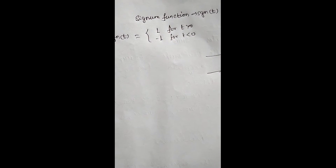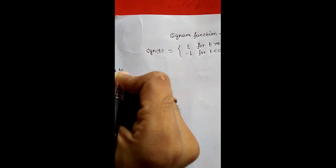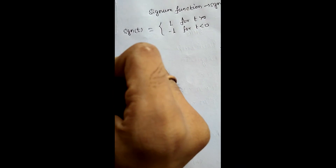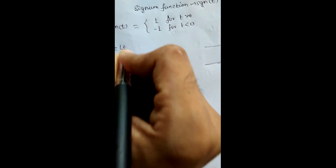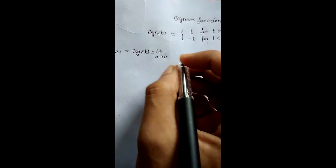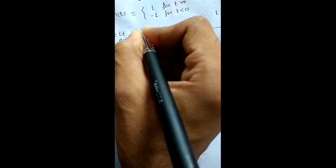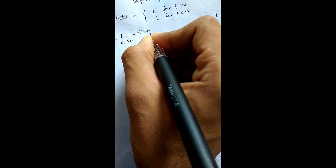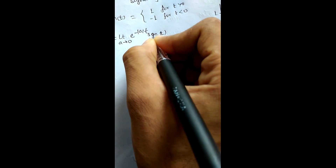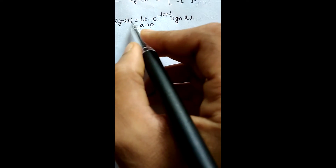For finding the Fourier transform of a signum function, let us consider the function x(t) equal to sgn(t), which equals the limit as a tends to 0 of e to the power minus |a|t times sgn(t). If we put a equal to 0, then this becomes sgn(t).